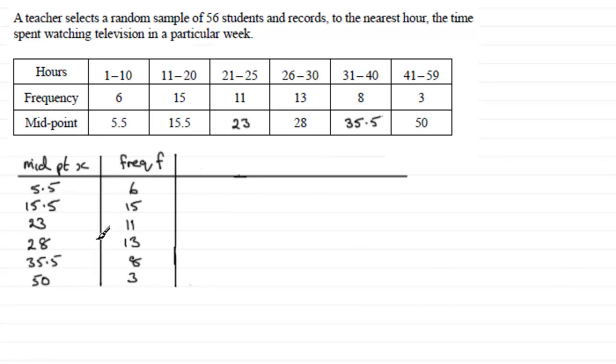I would set it out in columns like this. I'll take my midpoint, which is now going to be my value x, and copy out these values in this bottom row here. And then we've got the frequency f, and I would write that down in a column.